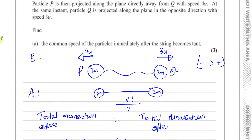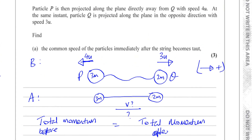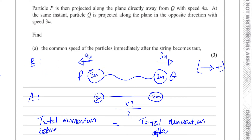But supposing the question asked about direction, which is quite common — a lot of students say 'to the left' because they called left positive. But you can't say 'to the left' because who told you to draw P on this side and Q on that side? P could have been on the other side, in which case the answer would be to the right. So you don't mention left or right because your drawing was just how you chose to place the particles. You mention the direction in terms of how the particles were moving — in the same direction as P, or same direction as Q.